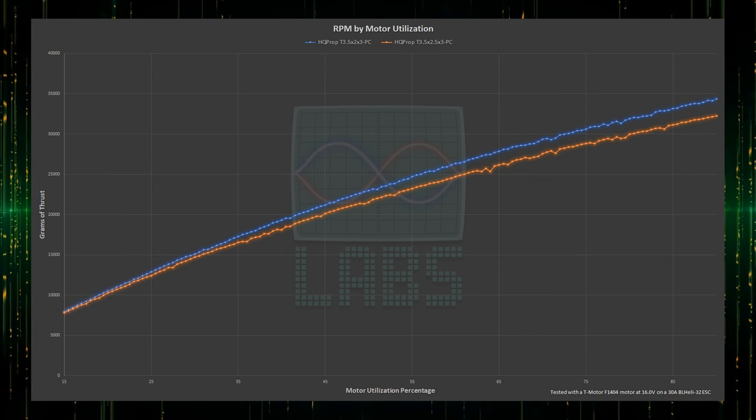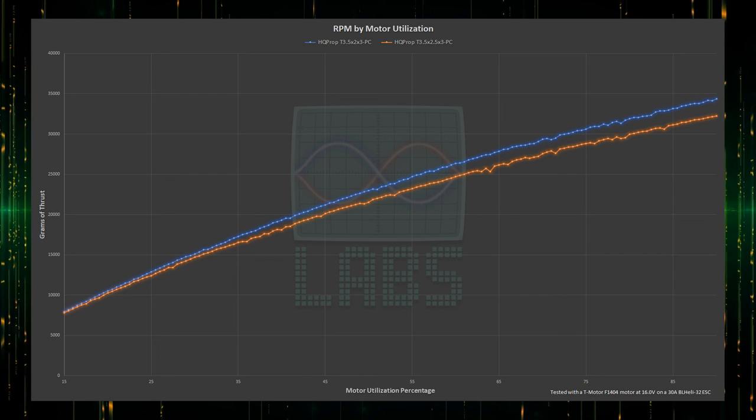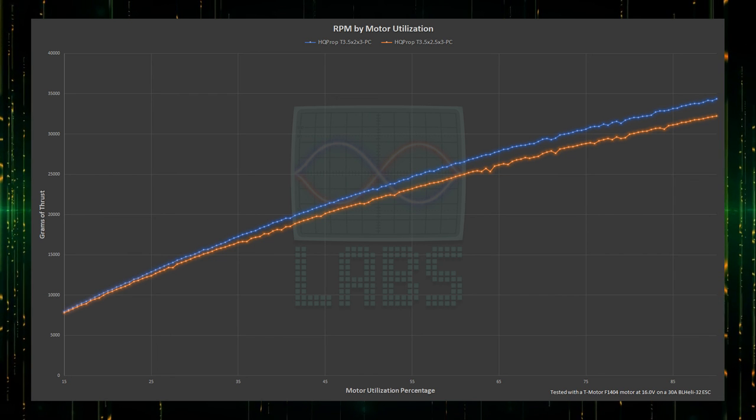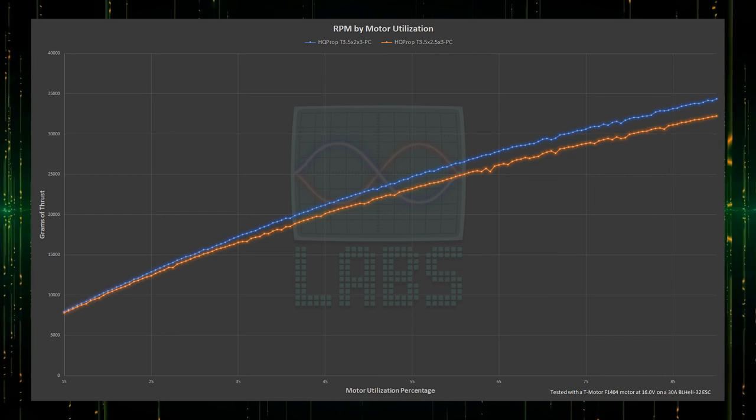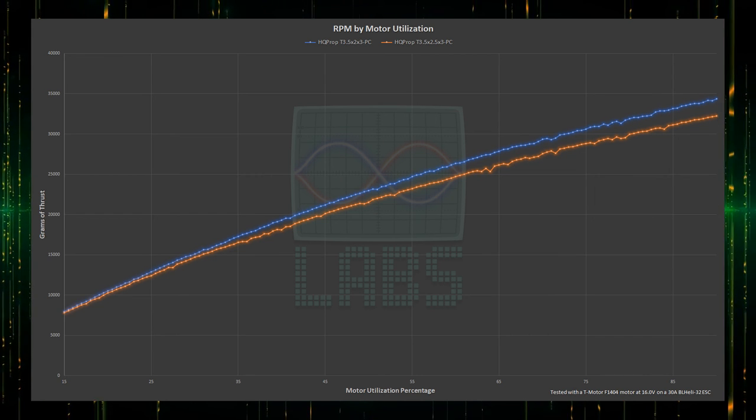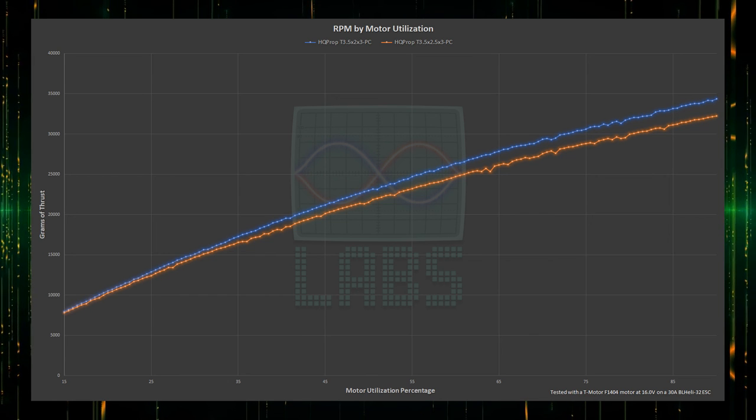Looking at RPM, we can see that the 2.5-inch pitch propeller comparatively has less RPM as we increase the throttle, which makes sense, since it would be harder for the motor to spin since it moves more air. This means it should in theory produce less noise than the 2-inch pitch propeller, which is already really quiet.